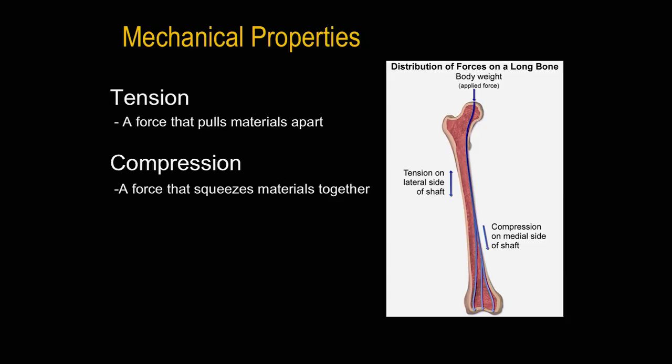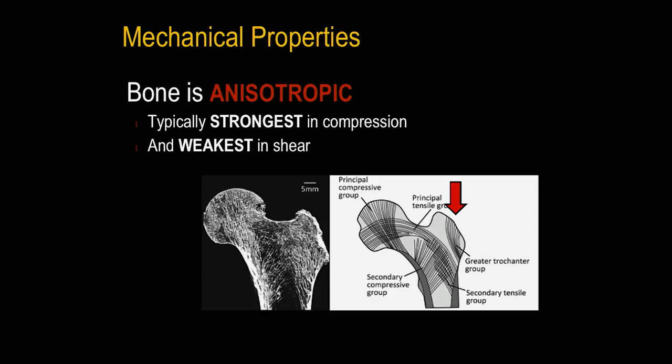Bone is anisotropic, meaning its physical property differs in value when measured in different directions. A common simple example is wood, which is stronger along the grain than against it. Bone reacts and works in largely the same way. This is important because it makes long bones vulnerable to fracture when loading occurs from a specific direction.